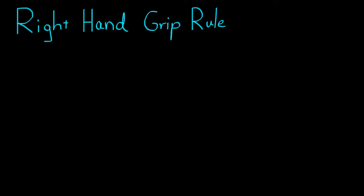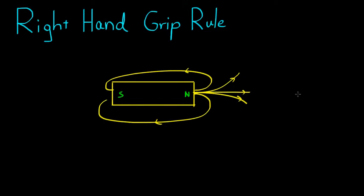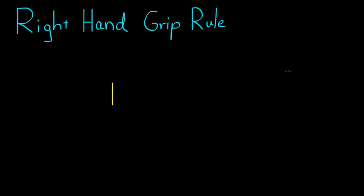In the first video we did on magnetism, everything was quite basic. We had these bar magnets here with a north and a south pole and they were producing these magnetic field lines which describe the direction the north pole of a compass would face and they're not allowed to cross. It gets more complicated when you bring in not a bar magnet but a moving charge, because a moving charge like a moving electron or a moving proton generates a magnetic field.